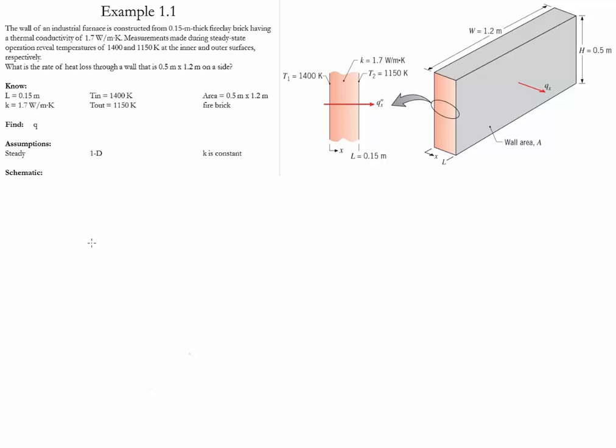Example 1.1. This is a steady one-dimensional conduction case with properties that are constant. The cross-sectional area is rectangular with a depth L.